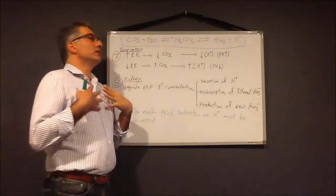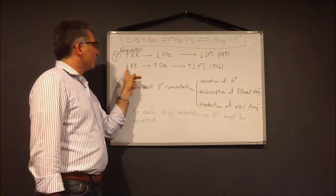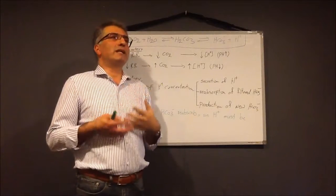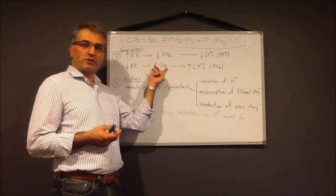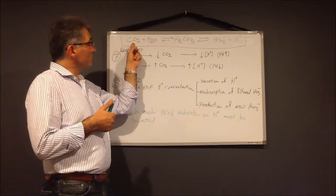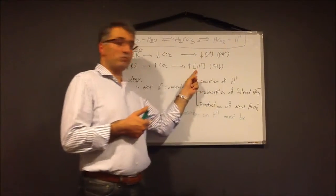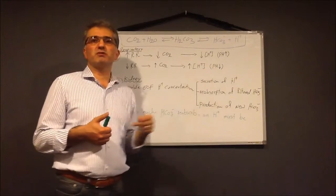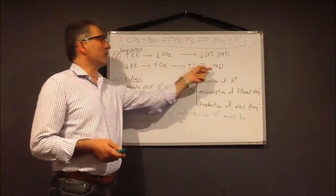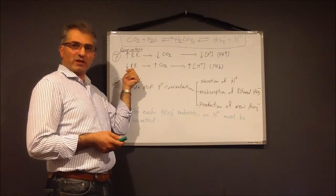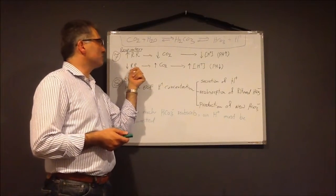If respiratory rate drops, we ventilate slowly and CO2 concentration in the blood increases. When we have more CO2, the reaction moves to produce more protons, and our pH drops — this is acidosis. Because the origin is the respiratory system, we call it respiratory acidosis.